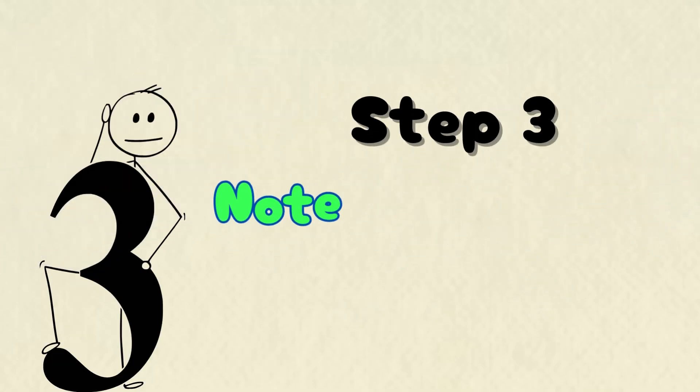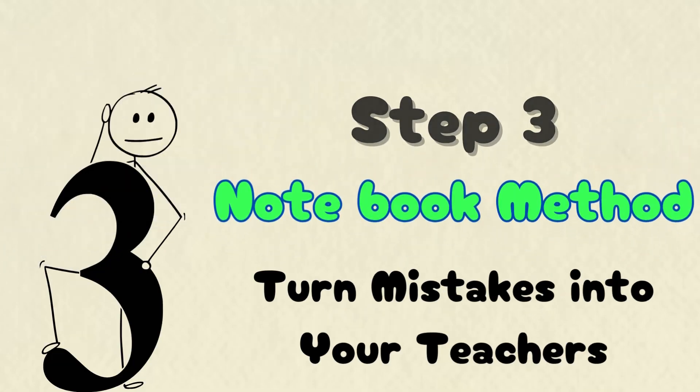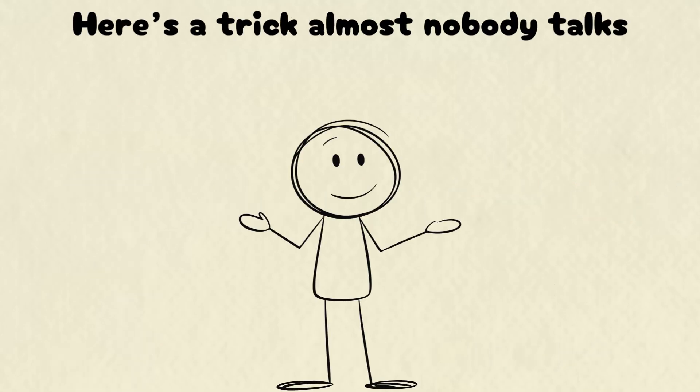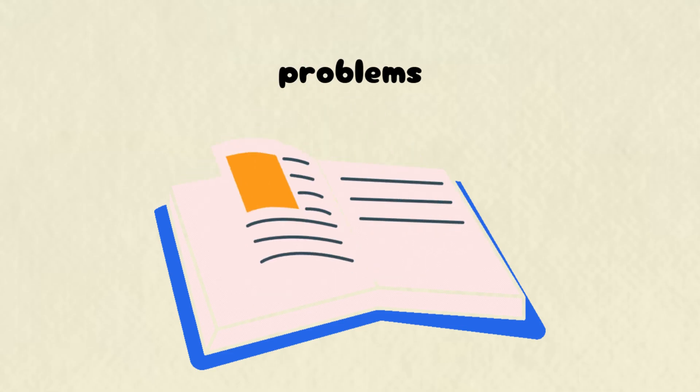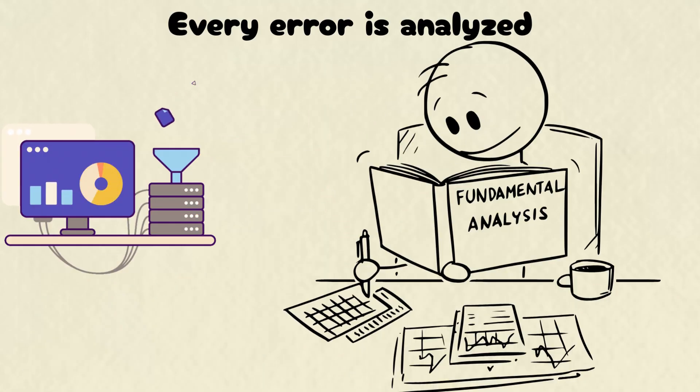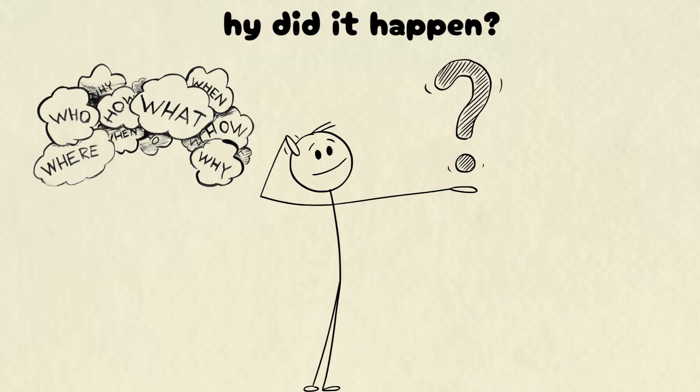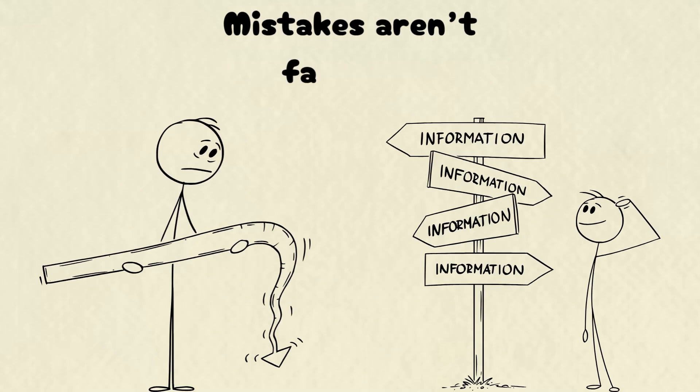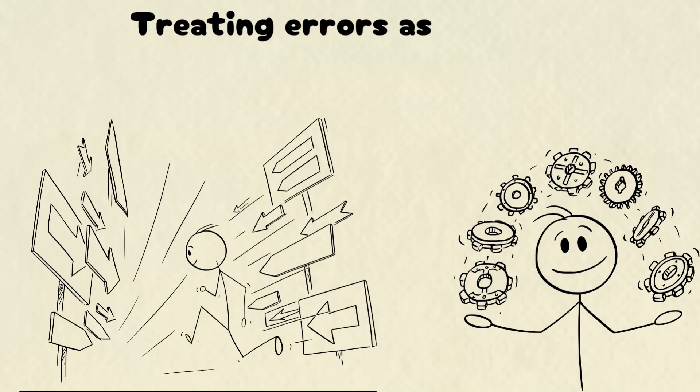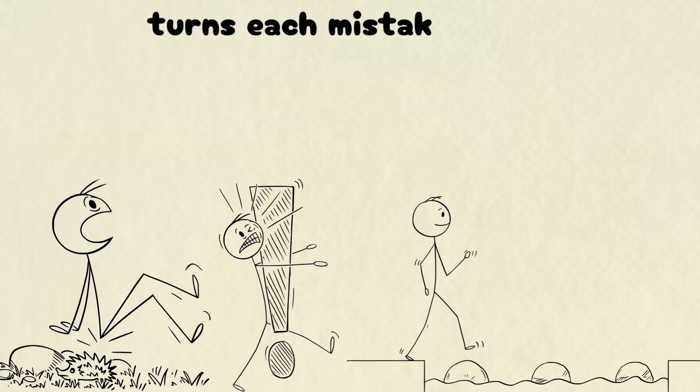Step three, notebook method. Turn mistakes into your teachers. Here's a trick almost nobody talks about. Dedicated math notebooks. One side for solving problems, the other for mistakes. Every error is analyzed. Why did it happen? Carelessness? Misunderstanding? Rushing? Mistakes aren't failures, they're feedback. Treating errors as learning opportunities turns each mistake into a stepping stone for mastery.